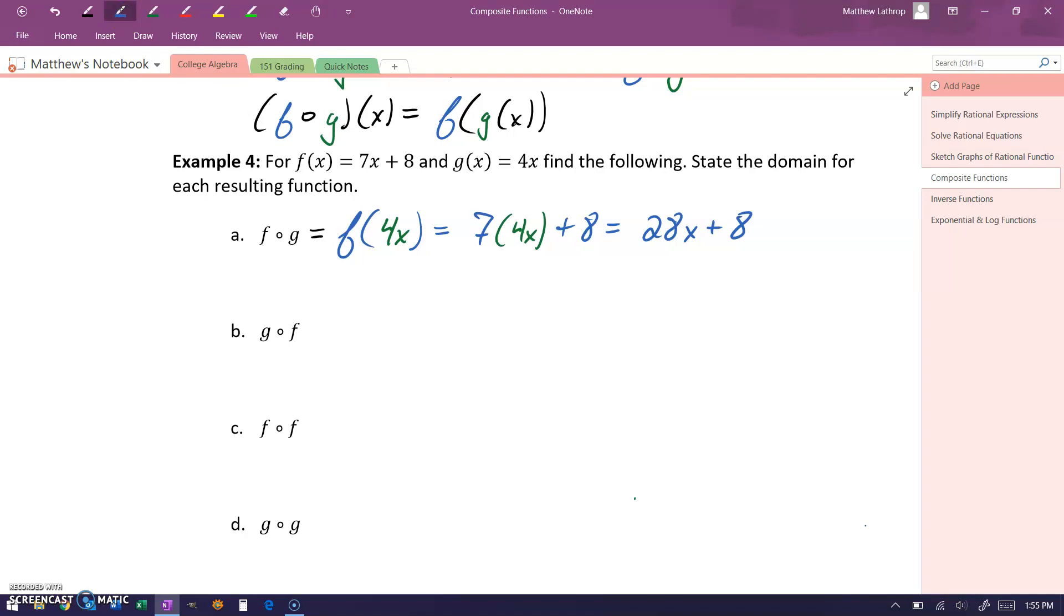We can also look at evaluating g of f, which means we want to take our function g of x and evaluate it at our function f of x, which is 7x plus eight. Again here, we'll take that function g, and everywhere we have an x, we'll plug in that expression for f of x, and then simplify or distribute, in this case bringing us to 28x plus 32.